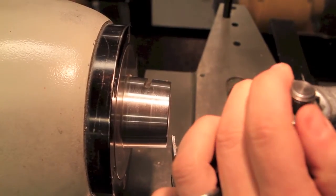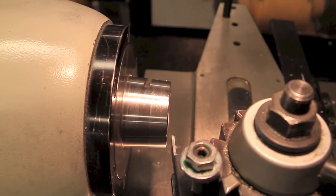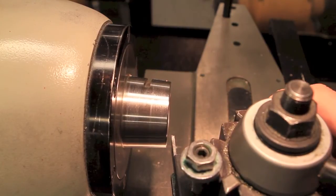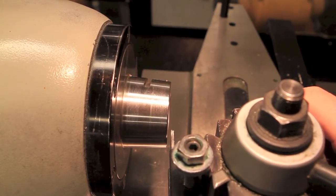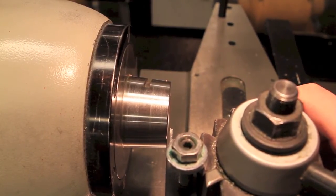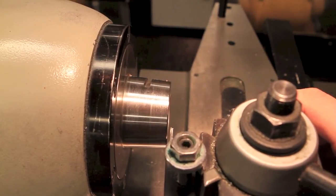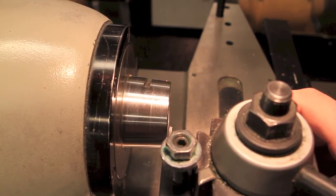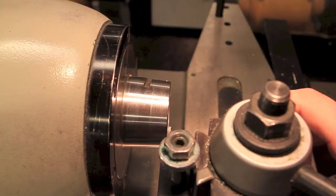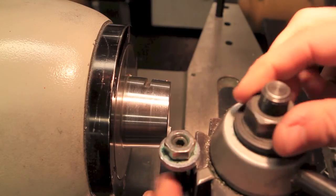The tool needs to be moved so it's perpendicular to the part. Loosen the nut on top, then move the tool so it's square. Each machine is a little different, so the instructor will provide specific instructions. When done, tighten the top nut.